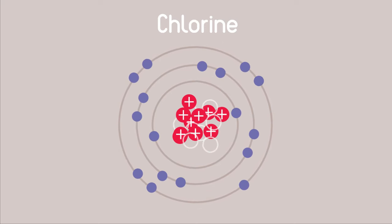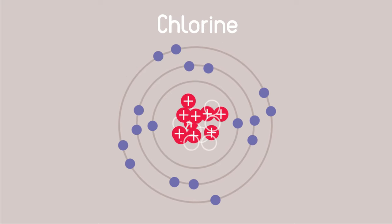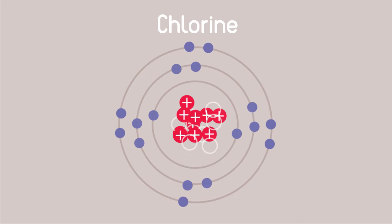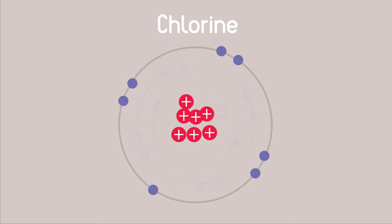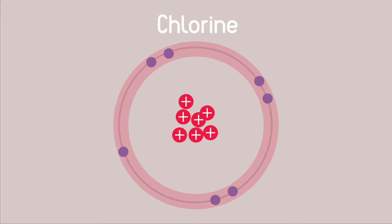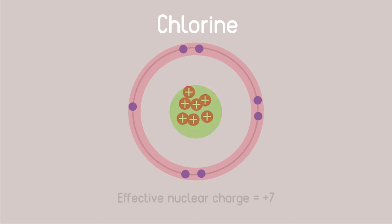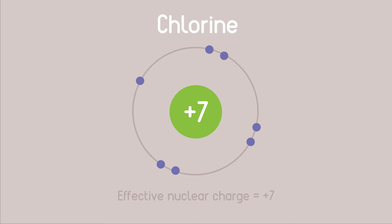Thus in chlorine the inner 10 electrons will cancel out or neutralize the effect of 10 of the protons. So the outer 7 electrons feel an effective charge of just 7 plus holding them in their outer shell.